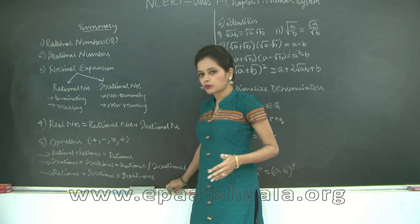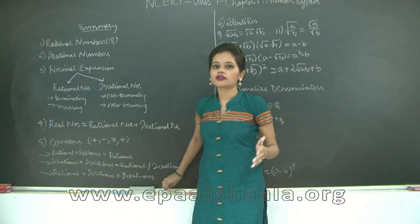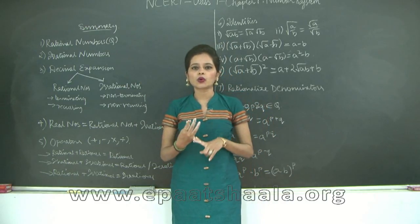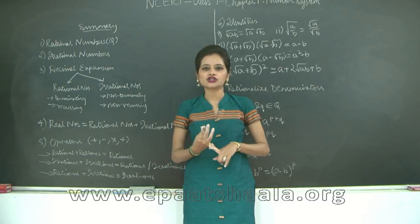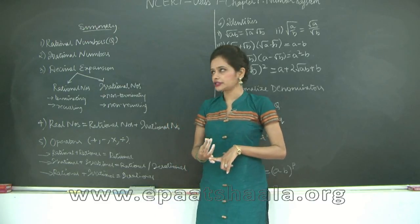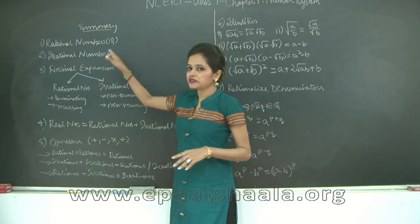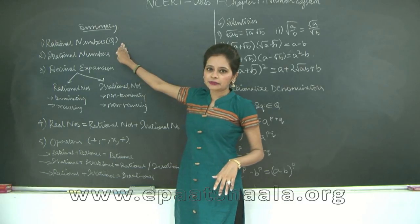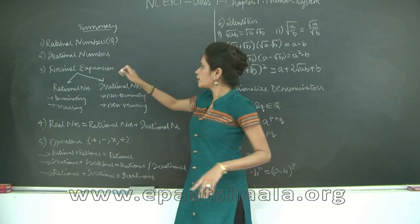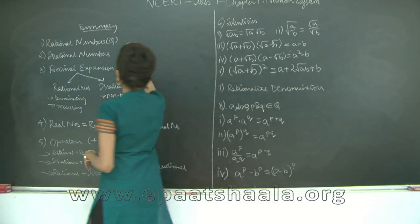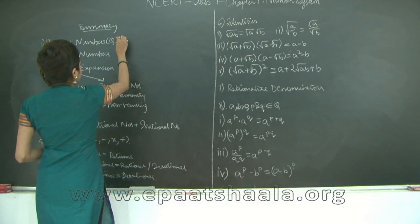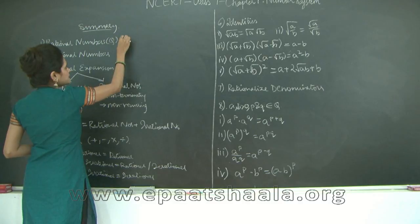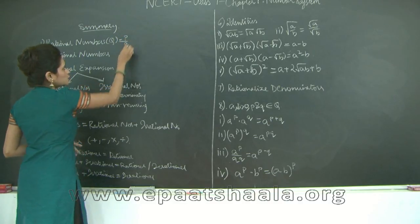The first thing is what real numbers are. We had natural numbers, whole numbers, integers, rational and irrational numbers. Starting with rational numbers, they are represented by the alphabet Q, and rational numbers can be written as p upon q.